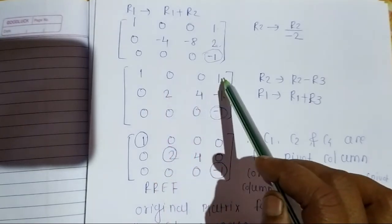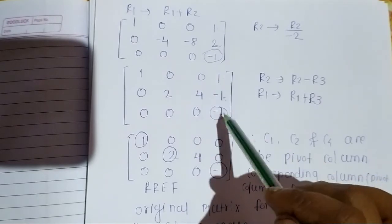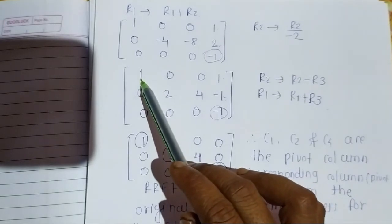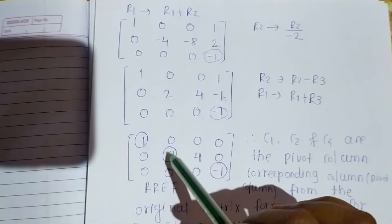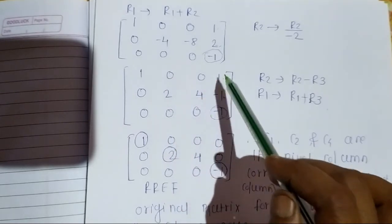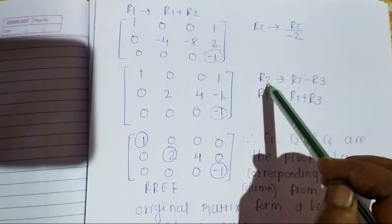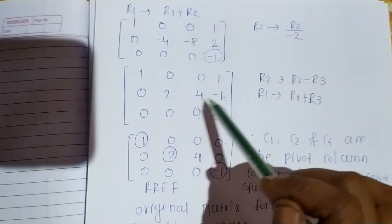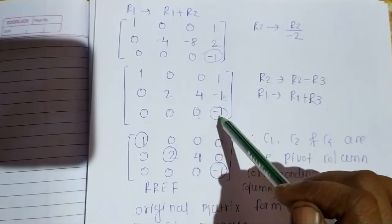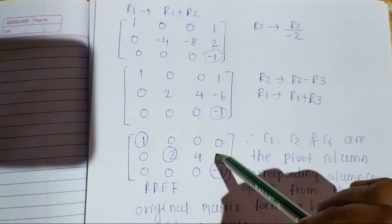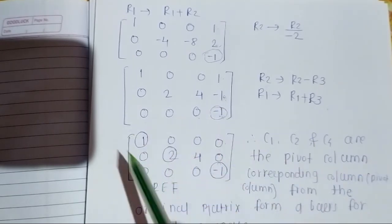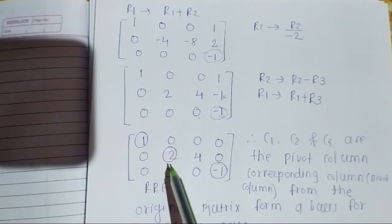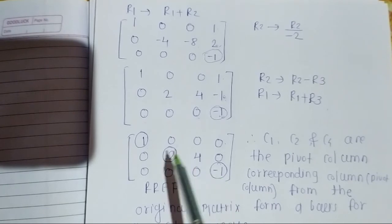We also update R1 → R1 plus R3: 1 plus 0 = 1, 0 plus 0 = 0, 0 plus 0 = 0, 1 plus (-1) = 0. Then R2 → R2 minus R3: 0 minus 0 = 0, 2 minus 0 = 2, 4 minus 0 = 4, -1 minus (-1) = 0. Now we have the diagonal in RREF — first diagonal below zero, second diagonal above and below zero, third diagonal in its position.